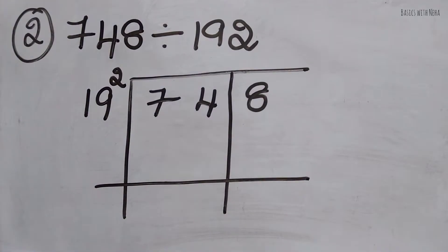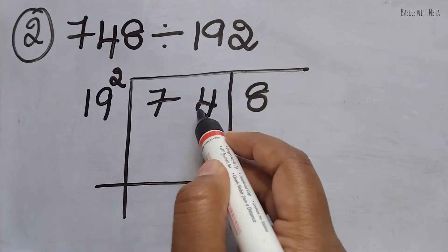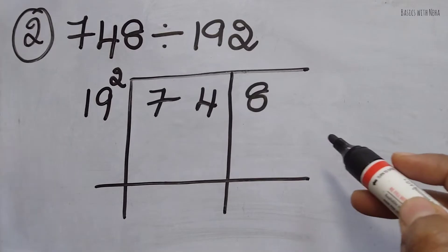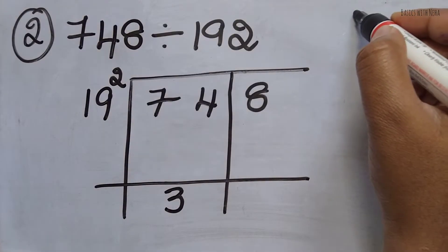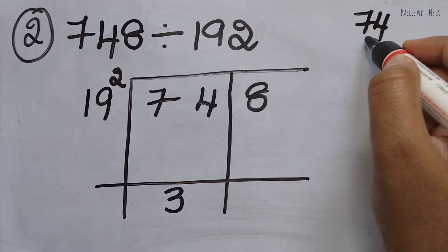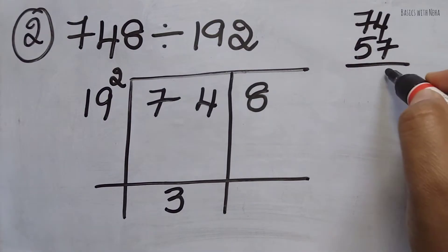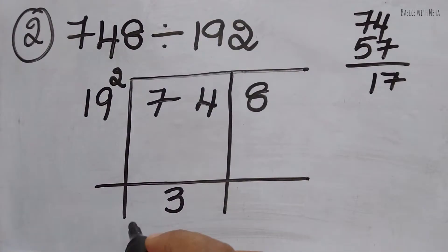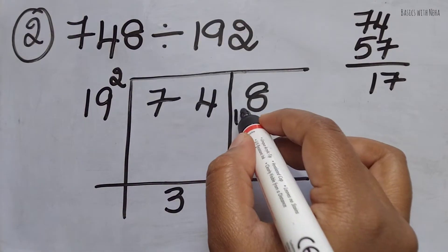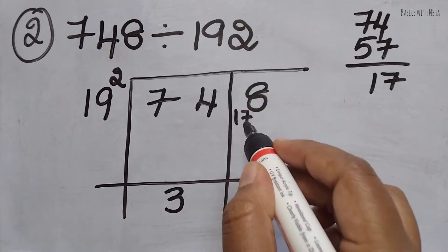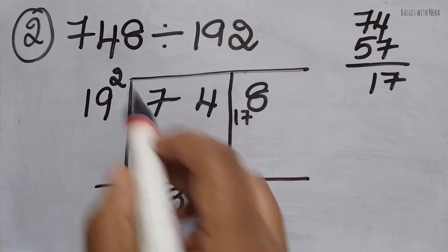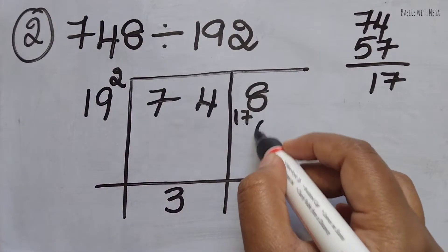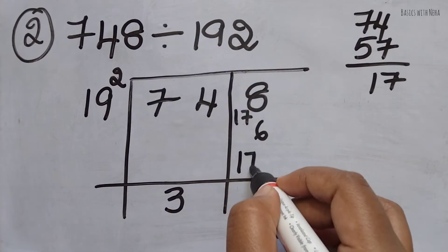Now let me start solving it. 19 goes into 74 how many times? If I take 19 times 4, that's 76. So I can take 19 times 3 - that's 57. So it is 74 minus 57 equals 17. Now I have 17, I'm going to take the 17 here - that is the remainder 17, it is 178 now. Now I have to multiply 19 by 3 times 2, which is 6. 178 minus 6 is 172.